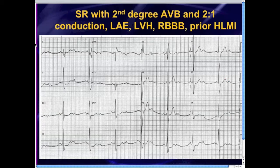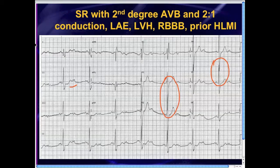So the formal interpretation, putting everything together: sinus rhythm with second degree AV block and two-to-one conduction; left atrial enlargement with probable mitral stenosis; left ventricular hypertrophy — the large QRS complexes, with the S wave in lead two plus R wave in V5 certainly greater than 35 millimeters; right bundle branch block; and prior high lateral myocardial infarction. What I really wanted to focus your attention on was that second degree AV block with two-to-one conduction, and those interesting P waves.